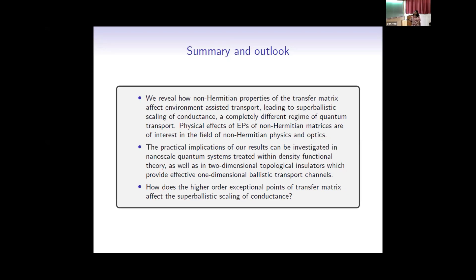The practical implication: we have considered a very simple tight-binding model, and extending our results to realistic materials via DFT would be of great interest. We have also considered a nearest-neighbor hopping model, but with finite-range hopping the dimension of the transfer matrix increases, showing richer non-Hermitian behaviors — potentially higher-order exceptional point degeneracies — and how this affects super-ballistic scaling of conductance is what we are currently studying.